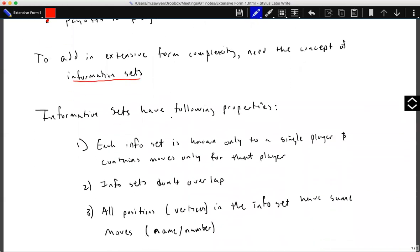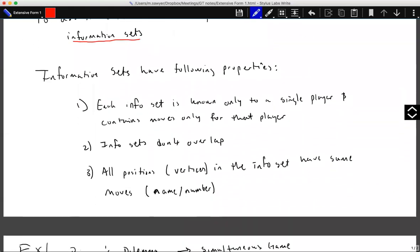An information set has the following three properties. So first off, the information set is only known to a single player. And this is important because a single player only knows what moves they have, and it only contains moves for that player and no other player.